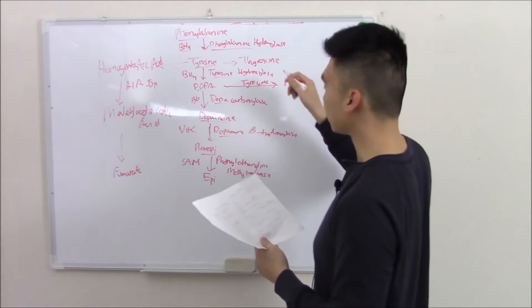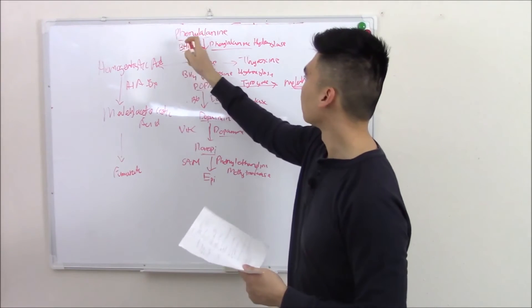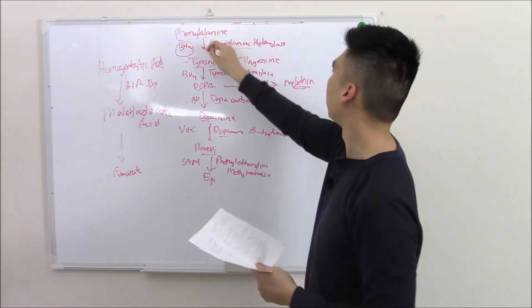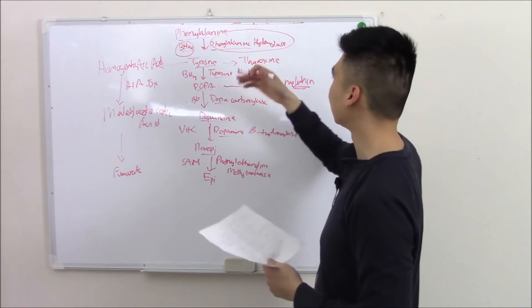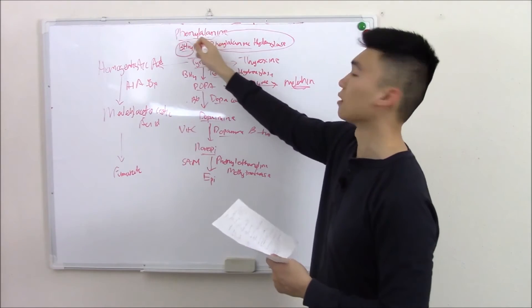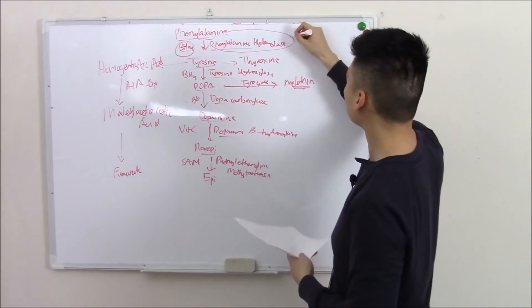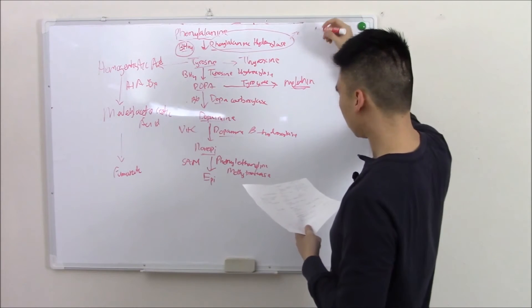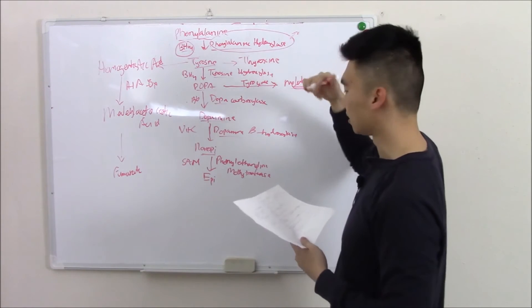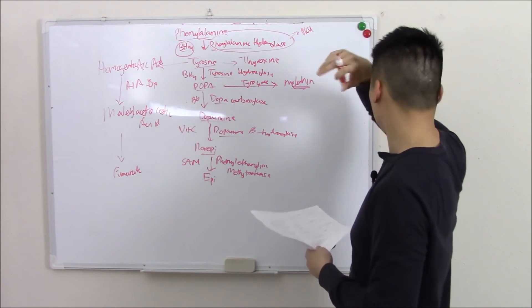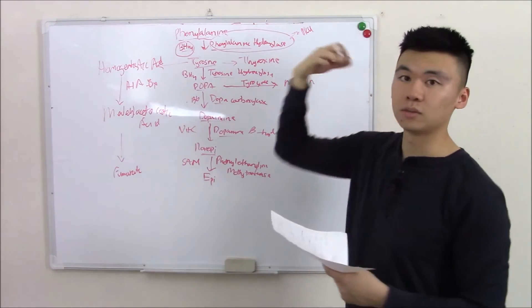If you have a deficiency in BH4 or phenylalanine hydroxylase, you're gonna have a buildup of phenylalanine. You can't go down the pathway. So increased phenylalanine in your urine is called phenylketonuria or PKU. We screen PKU in all newborns.